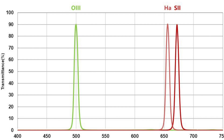The three most common frequencies we capture are hydrogen alpha, which emits at 656 nanometers; sulfur 2 at 672 nanometers; and oxygen 3 at 500 nanometers. There are filters made within those specific frequencies.